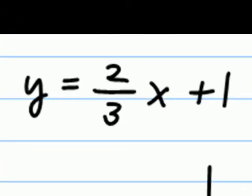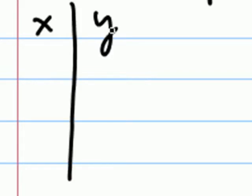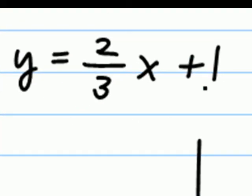In our first example, let's graph the line that corresponds to the equation y equals two-thirds x plus one. We'll begin with our table of values. For our table of values here, because the equation is already solved for y,